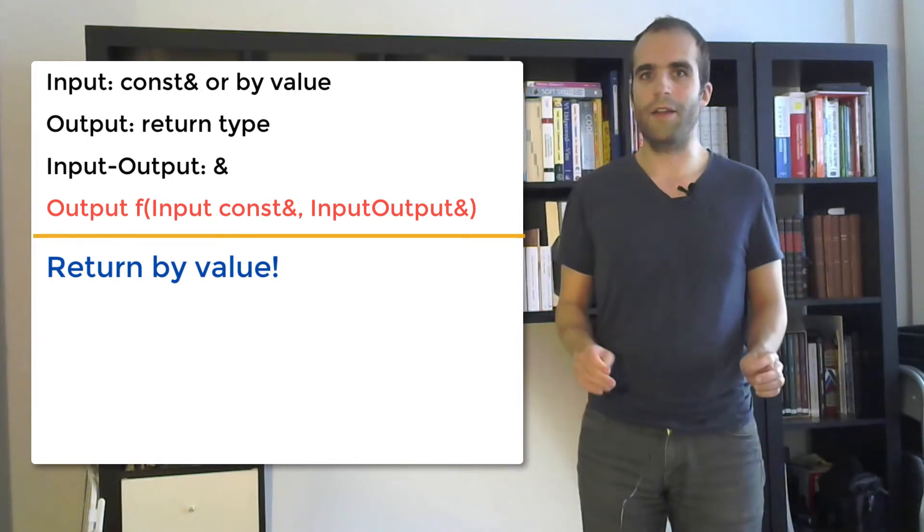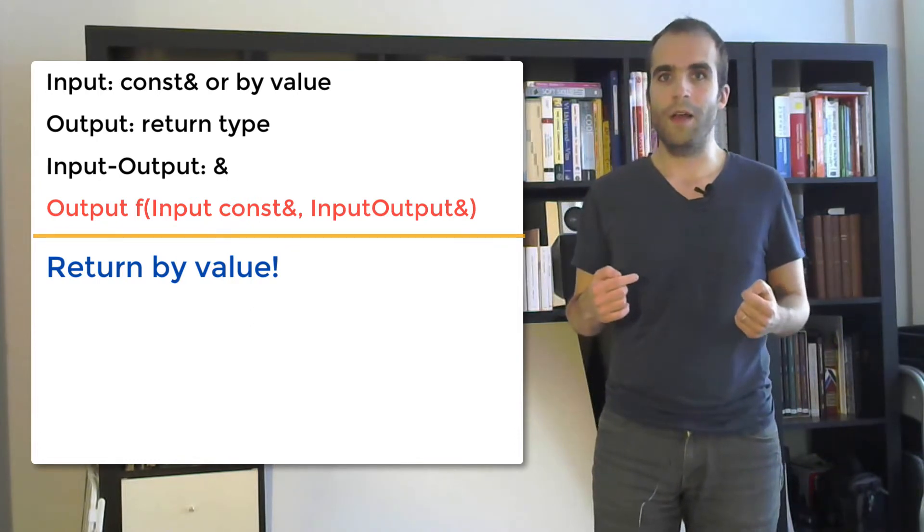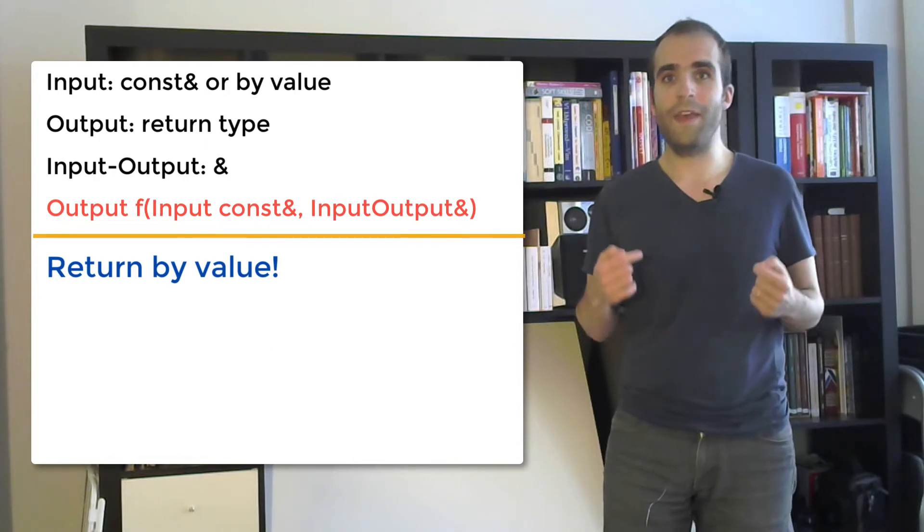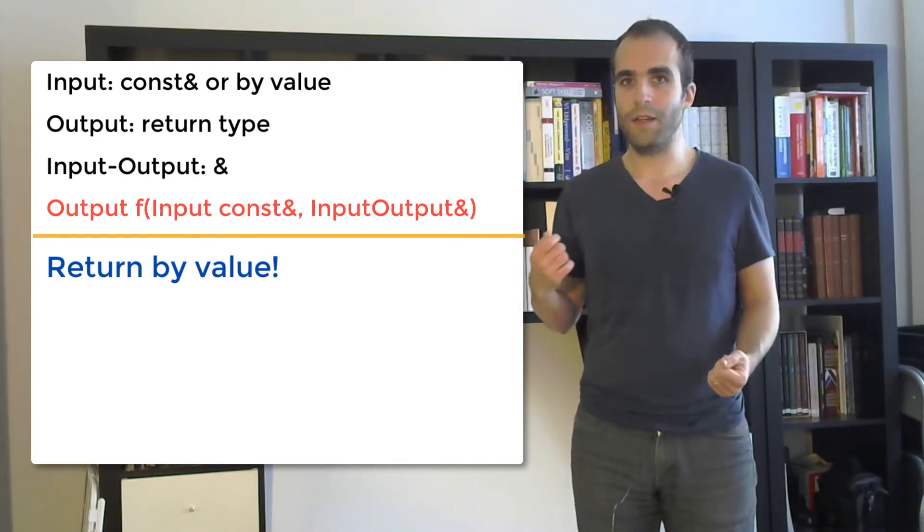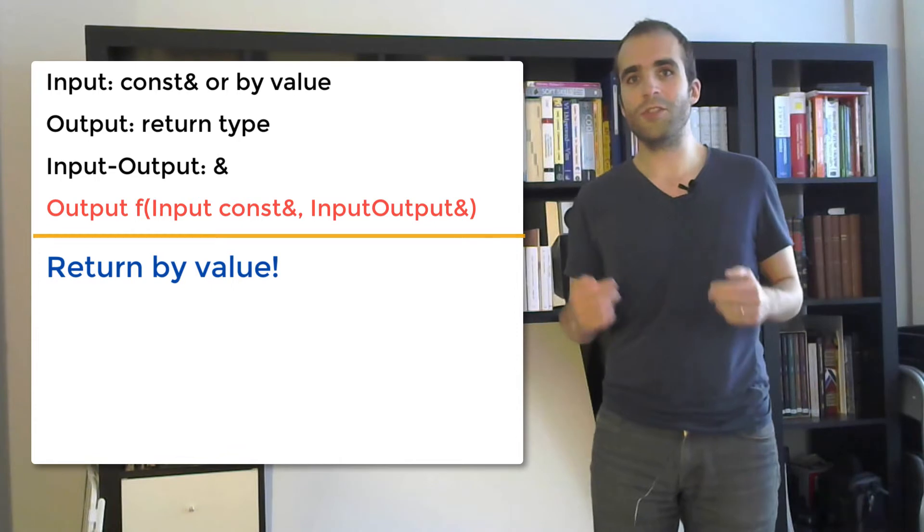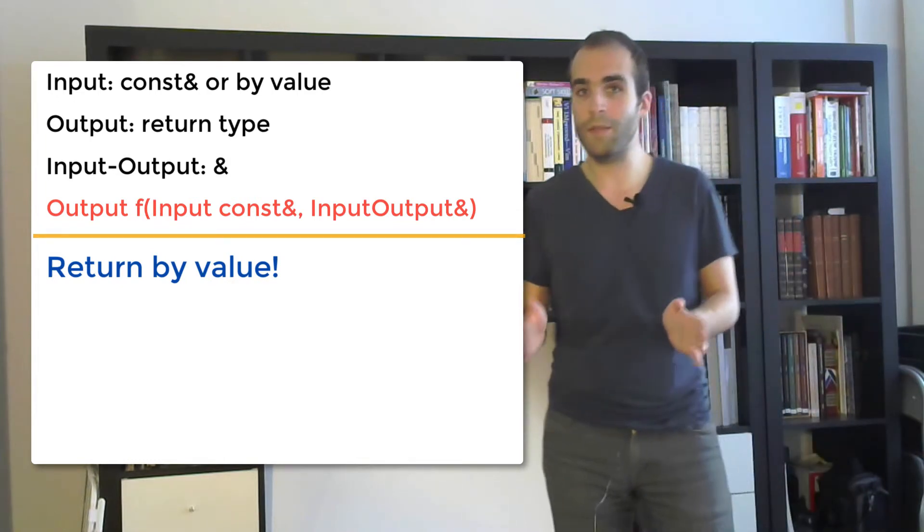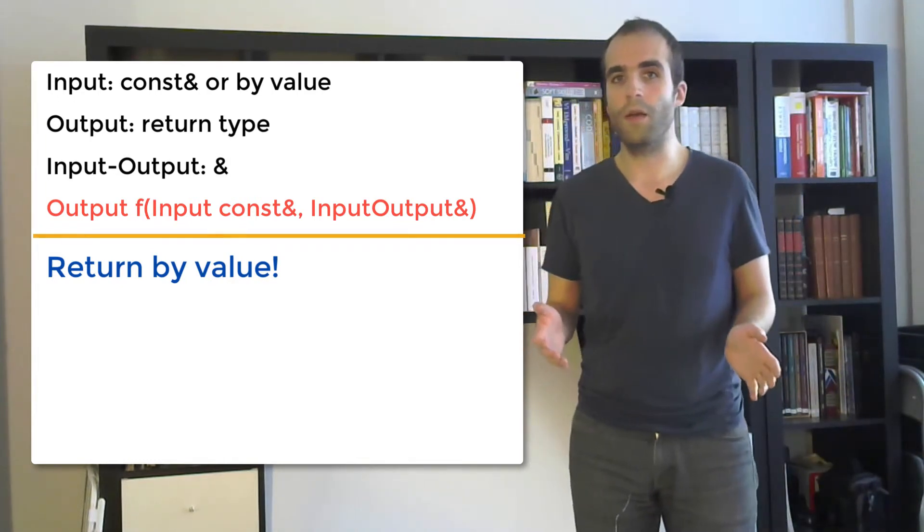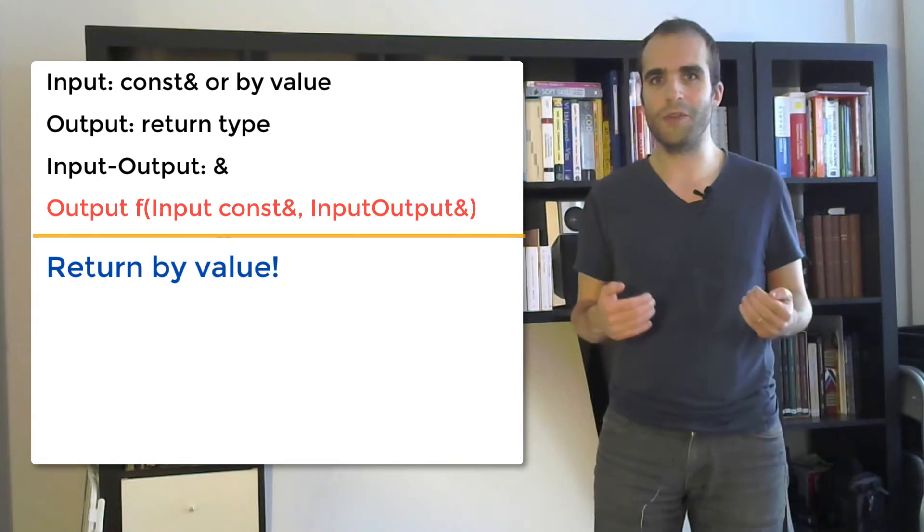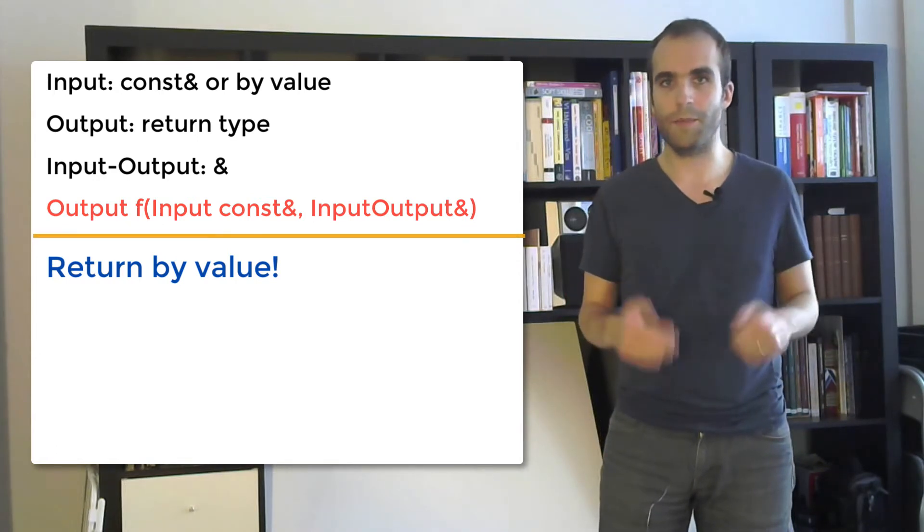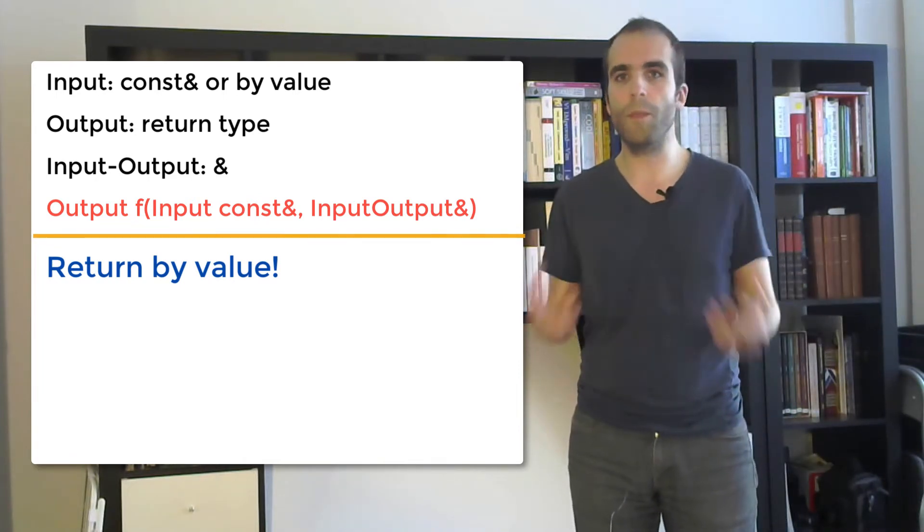But returning output through the return type is sometimes something that's difficult to do. And there's another option for that, which is passing outputs as reference which are not const. And this lets the function write to that reference. But this is not good. It's not good because it doesn't show that this is an output. When reference to not const means input-output, it doesn't mean output. So it's confusing. Also, when you use a function that takes its output as a parameter as opposed to the return type, then it makes for code that's awkward, that's more complicated than what it should be.